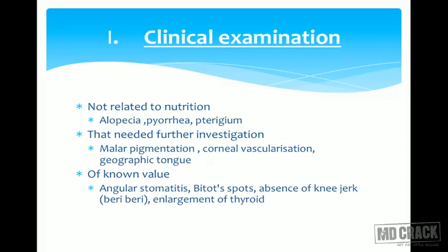Let us start with clinical examination. Clinical examinations not directly related to nutrition are alopecia, pyorrhea, and pterygium. Signs which need further investigation are malar pigmentation, corneal vascularization, and geographic tongue — these are in the suspected category. Of known value are angular stomatitis, Bitot's spot, absence of knee jerk in beriberi, and enlargement of thyroid in goiter.